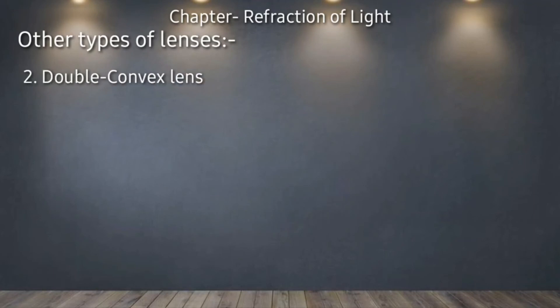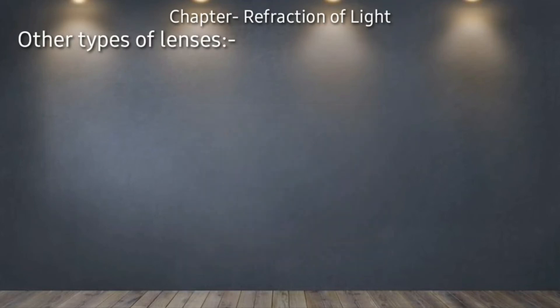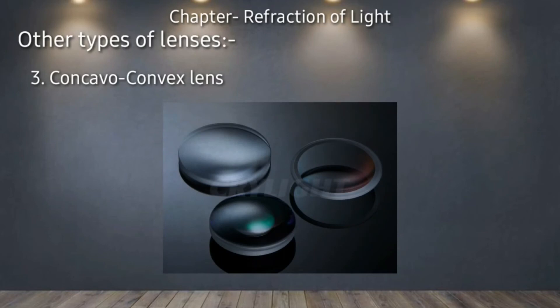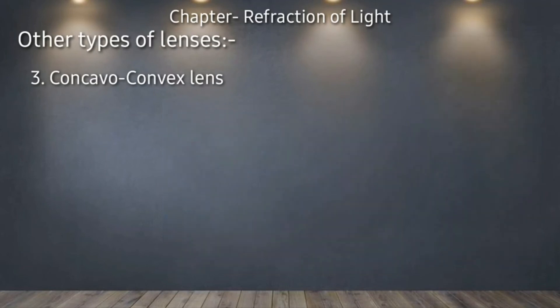Double convex lens — एक ऐसा lens जिसकी दोनों ही sides convex होती हैं, जिसको हम mostly इस्तेमाल करते हैं, उसको double convex lens कहा जाएगा। The third type is the concavo-convex lens — एक ऐसा lens जिसकी एक side concave और एक side convex होती है। इसको concave convex lens कहा जाता है, जिसे आप नीचे diagram में देख सकते हैं।